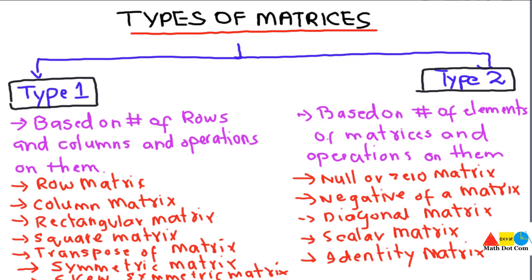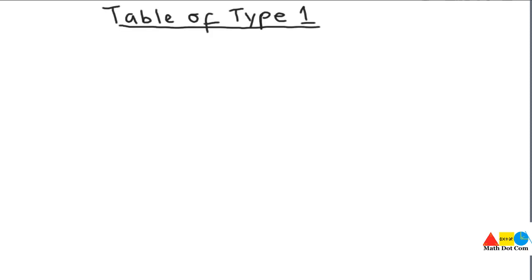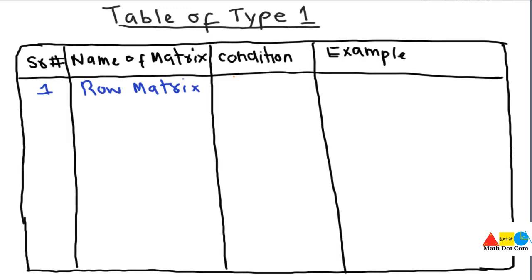Now we will discuss both these types in the form of a table, so you can memorize so many types and they come to your fingertips. We will first make the table of Type 1 matrices and discuss them one by one. You will find it becomes easier to remember them all using this technique.